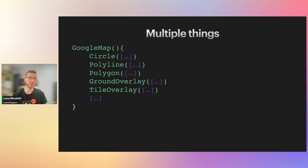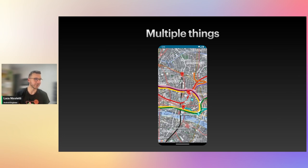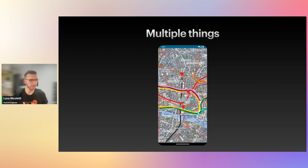One thing worth mentioning is that you can use everything together inside the GoogleMap composable function — circles, polylines, polygons, and different types of overlays all at once. Combining them, you can have a URL tile overlay, a ground overlay on top, and markers as well. You need to play around with the z-index of each function to place them correctly on top of one another, otherwise one would hide the other beneath it.